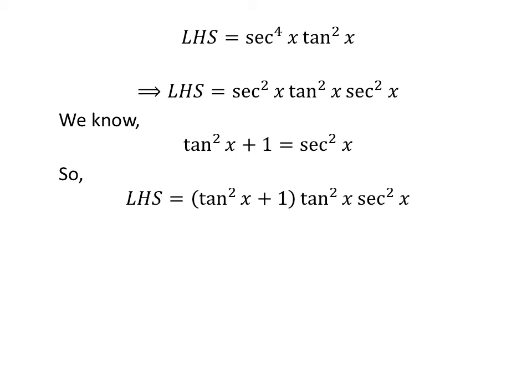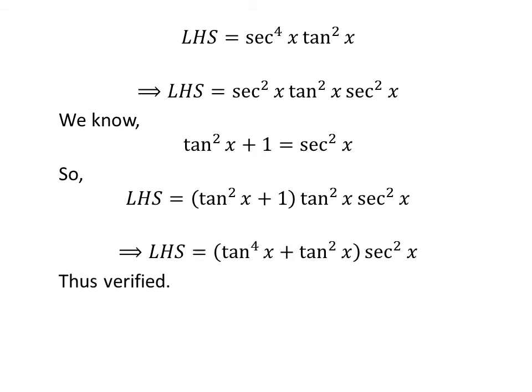Applying the above identity, the left hand side becomes: square of tangent of x plus 1, times square of tangent of x, times square of secant of x. This simplifies to tangent of x raised to the power of 4 plus square of tangent of x times square of secant of x, which equals the right hand side of the identity. Thus, we have verified the identity.